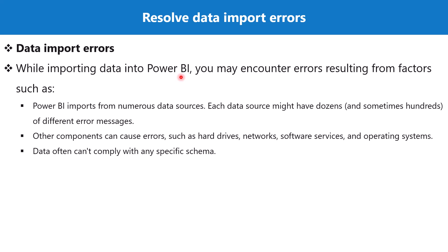While importing data into Power BI there could be multiple factors which result in errors. Each data source can have dozens or sometimes hundreds of different error messages. Other components that can cause errors include hard drives, networks, software services, and the operating system. If you are connecting to a data source that is a server, errors can be related to the network drive, hard drive, the network itself, and services and operating systems running on that server. Lastly, you could have errors where the data cannot comply with a specific schema.